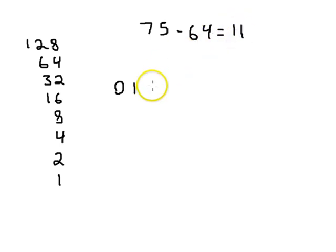So now we have 11. Can we subtract 32 from 11? No, we cannot. Can we subtract 16? No, we cannot. Can we subtract 8? Yes, we can. So minus 8, and that will give us 3.